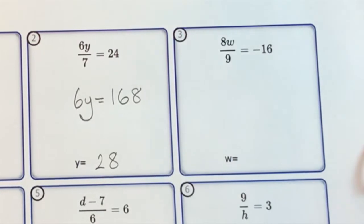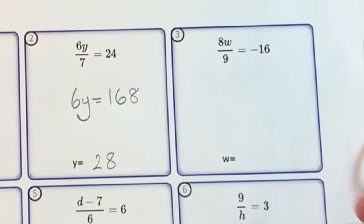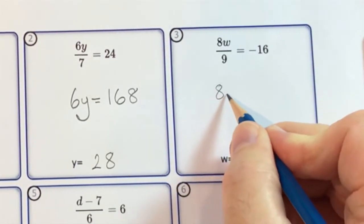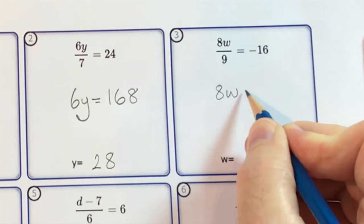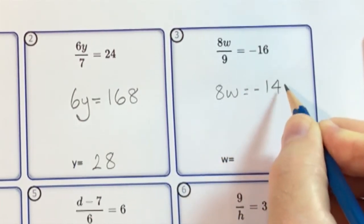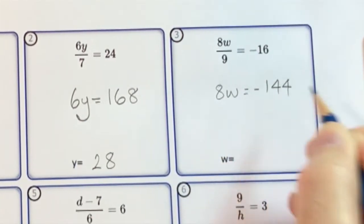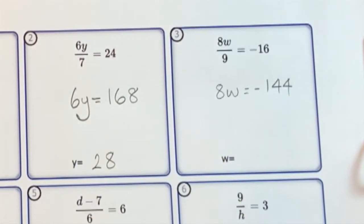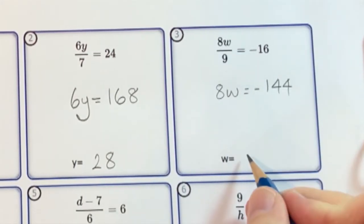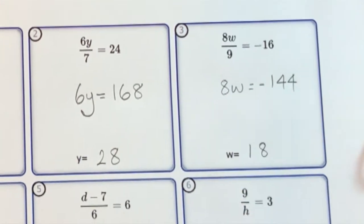Question 3: I'll multiply both sides by 9, which leaves me with 8w equal to minus 144. Then I'll divide both sides by 8, so w is equal to 18.